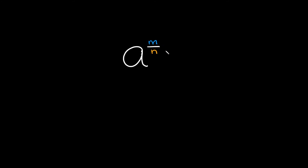Now let's go over the second case, where you have any numbers in your exponent — not just a 1 in the numerator. The bottom number still tells you your root or index: a 2 means square root, a 3 means cube root, a 4 means fourth root. The only extra step is dealing with the top number, which acts as your power.